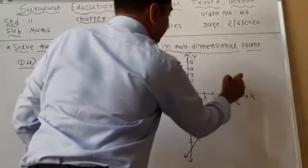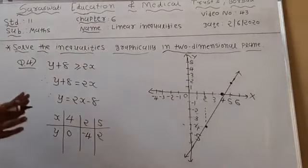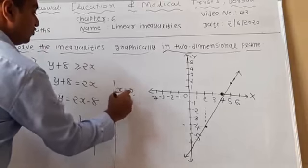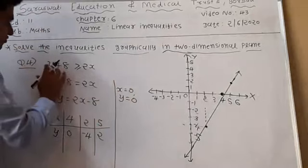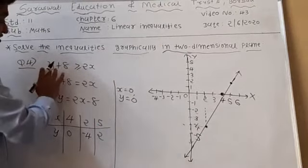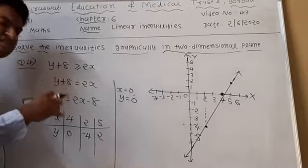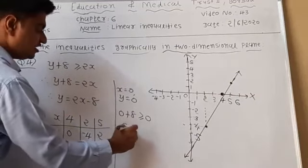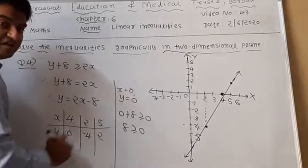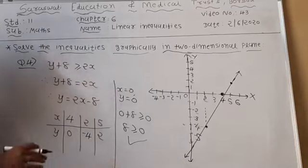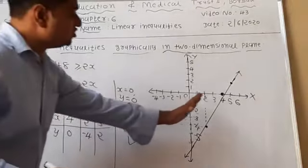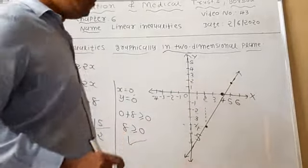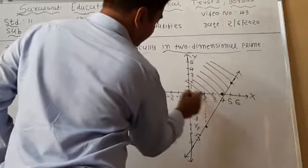In x-axis, 5 and 2 intersect at this point. Join all three points where they intersect the axis. Now decide the shaded portion. Apply x equal to 0 and y equal to 0: substitute in the equation — 0 plus 8 greater than or equal to 0, that means 8 greater than or equal to 0. This condition is satisfied, so the shaded portion is drawn on the origin side. Since greater than or equal to form is present, draw a dark (solid) line.